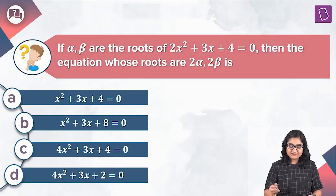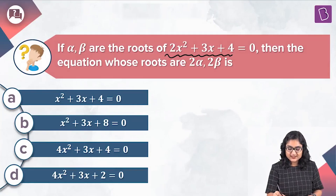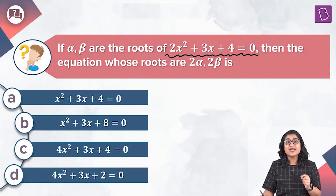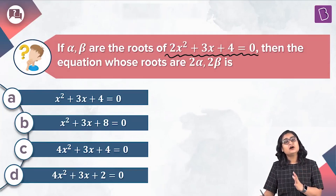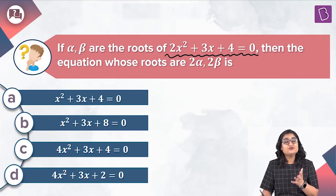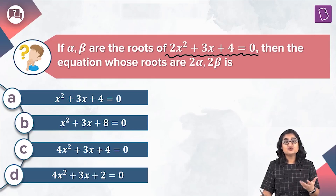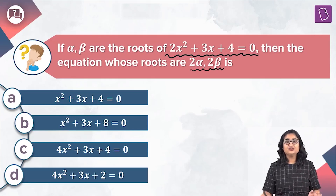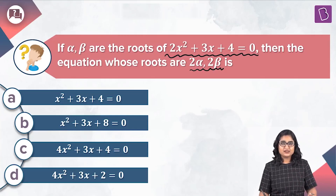In this question, we have been given a quadratic equation 2x squared plus 3x plus 4 equal to 0, and it's also given that alpha and beta are the roots of this quadratic equation. Then we have to frame a quadratic equation whose roots are given by 2 alpha and 2 beta.